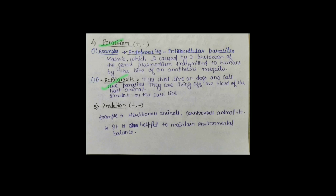दूसरा — Ecto-parasite का example: Ticks that live on Dogs। Dogs और Cats पे जो Ticks present होते हैं — ये Parasite हैं। They are living off the blood — ये Dog/Cat से Blood suck कर लेते हैं। तो इनको Nutrition मिल गया, but Dogs और Cats को इससे नुकसान हो गया। These are cases of Parasitism।